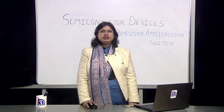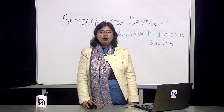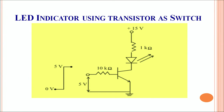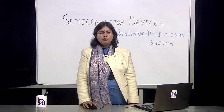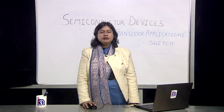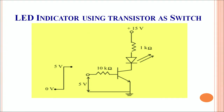An application of using the transistor as a switch is the LED indicator circuit. Whenever there is a high input, this causes the LED to glow. But when the input is lowered, the transistor is forced into cutoff, and the LED is automatically switched off. For a potential of 5 volts the LED glows, and the moment the potential drops to 0 volts, the transistor is cut off and no current flows across the LED, switching it off.